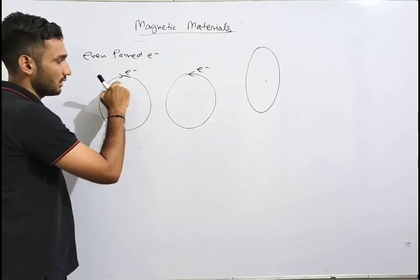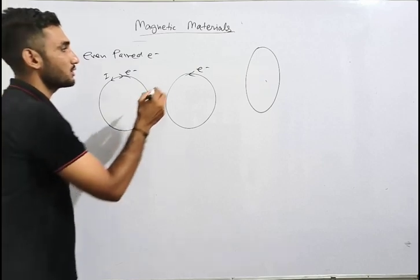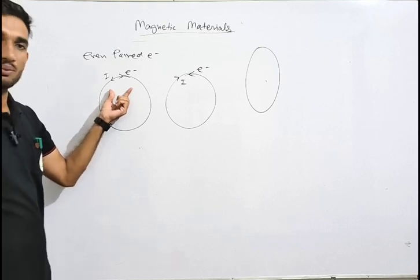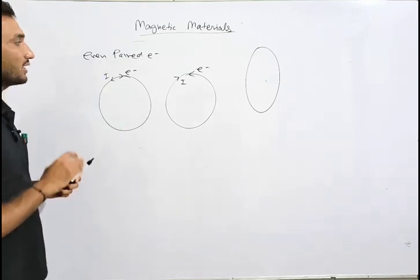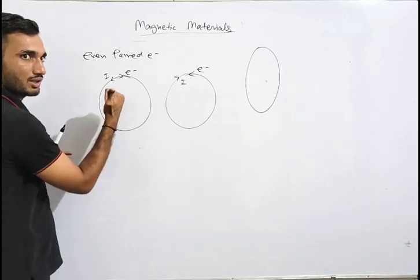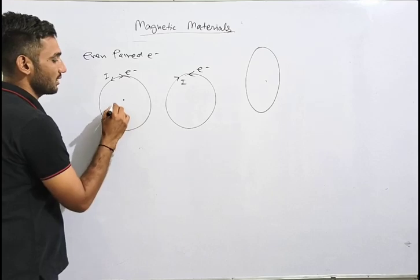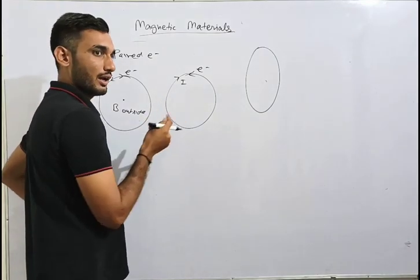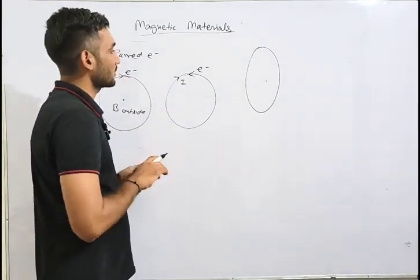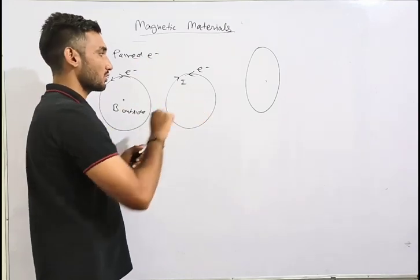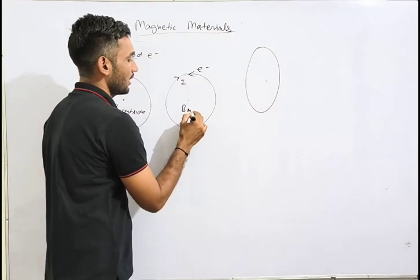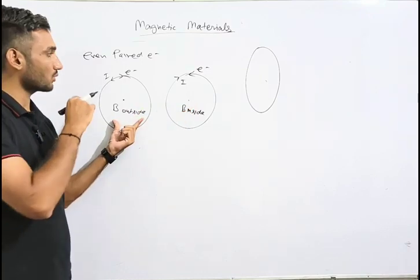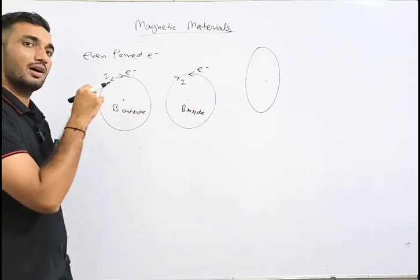Now, looking at the direction of current from electron motion — if electron moves anticlockwise, current is clockwise in that loop. Using the right-hand thumb rule, if current is in this direction, the magnetic field produced comes outside the board for one loop. For the other electron moving clockwise, the magnetic field produced is directed inside the board.